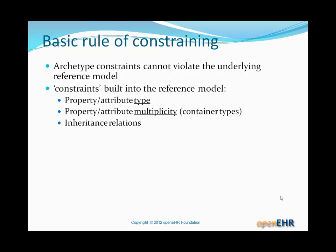The basic rule of constraining in archetype land is: archetype constraints cannot violate the underlying reference model. They are constraints — they narrow the in-built constraints. An information model actually has its own constraints. For example, if you have a class Person with a property Name of type String, that is essentially a constraint — it could have been of type Any. Making it String constrains it. Similarly, if Name has a multiplicity of 1-to-1 (mandatory), that's a constraint — it could have been 0-to-star. Inheritance relations also provide certain types of constraining.